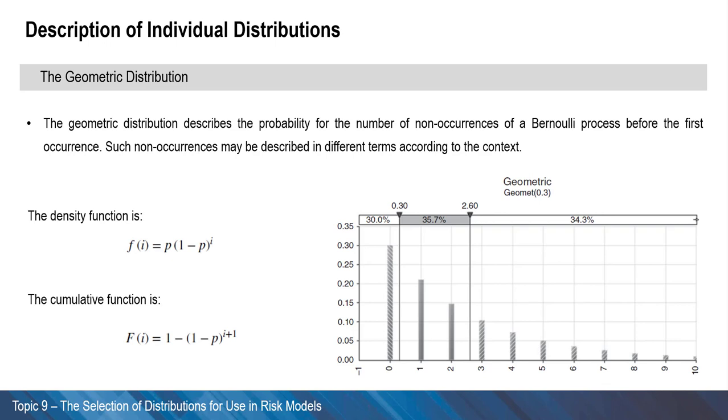For example, the number of periods before a breakdown of a manufacturing facility or of a car. Note that the distribution of waiting time, meaning the total number of periods until the first success has happened, is calculated by adding 1 to the value of the distribution.